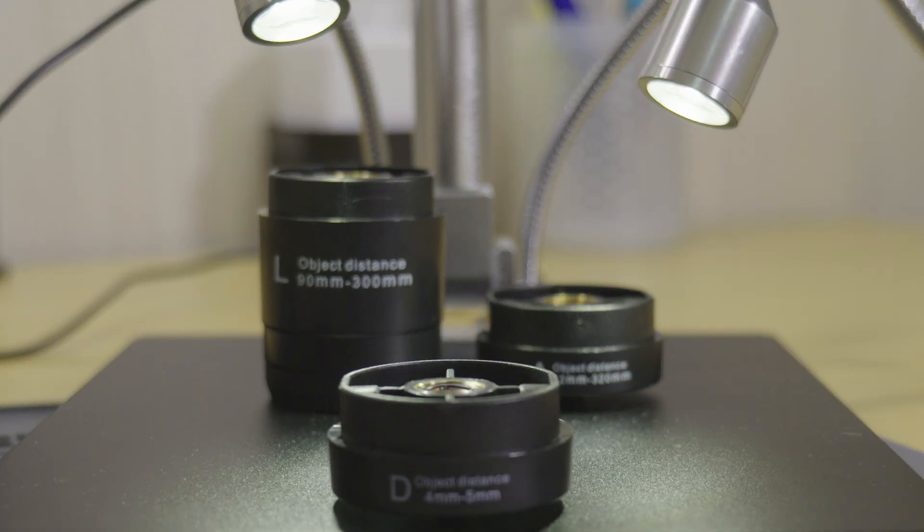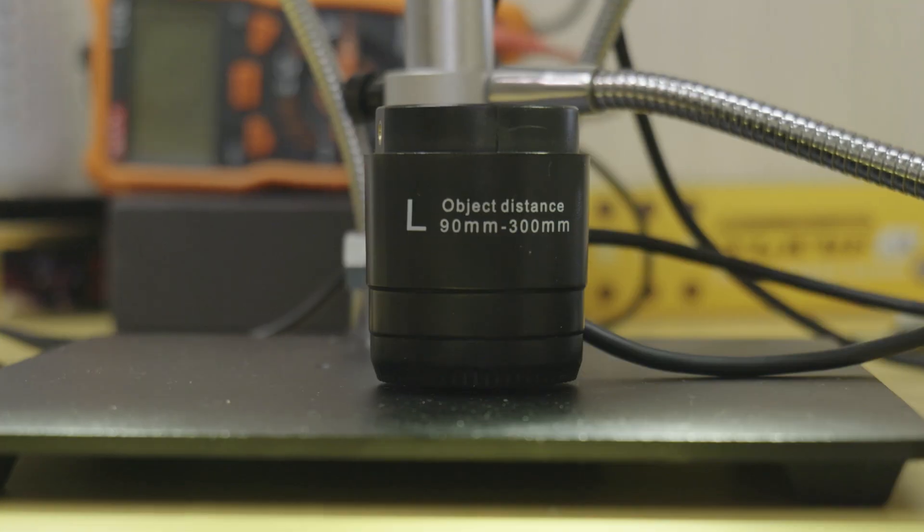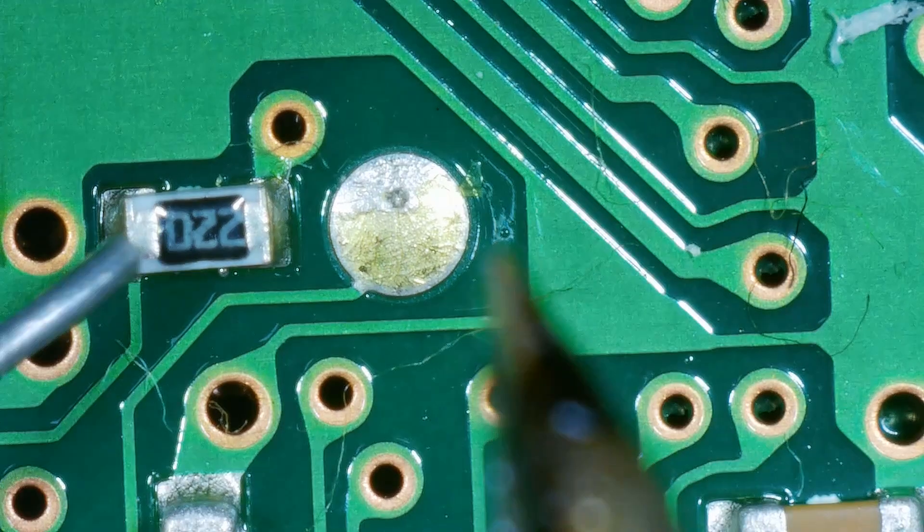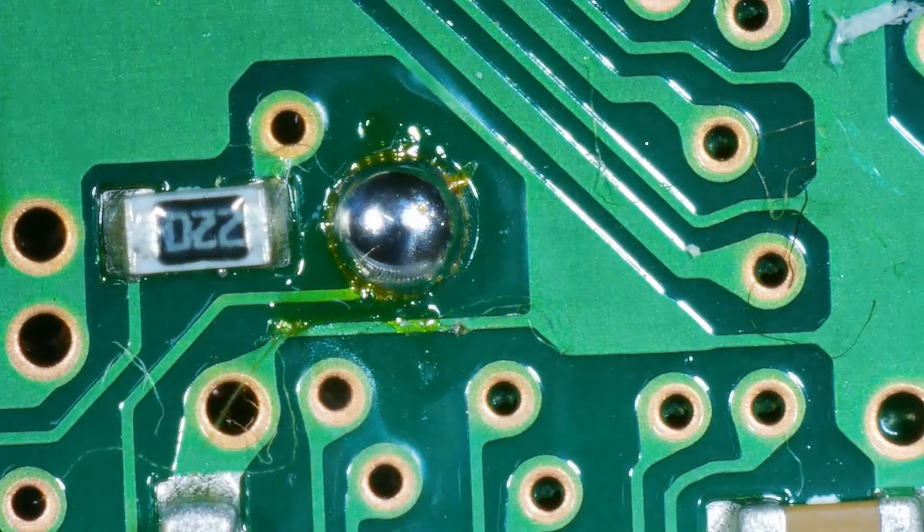The 3 lenses included are intended for 3 separate tasks. You have the L-type lens which is intended for soldering and has a minimum working distance of 90mm and a maximum working distance of 300mm.